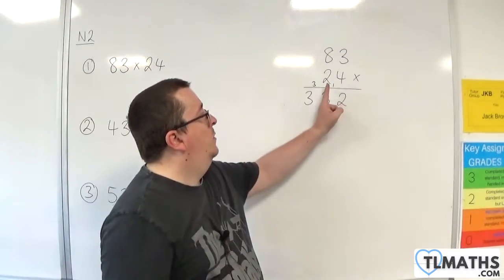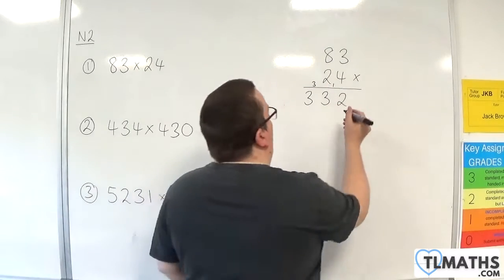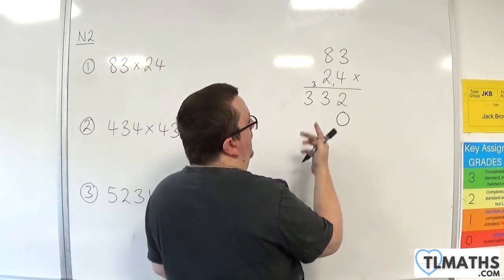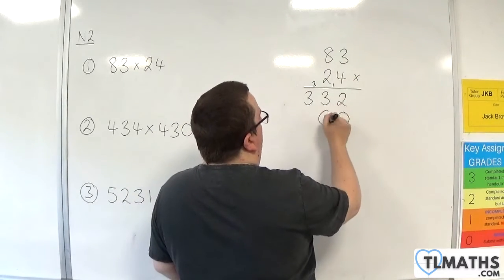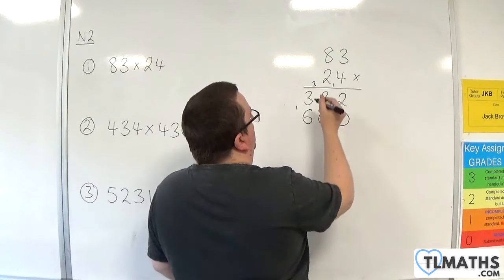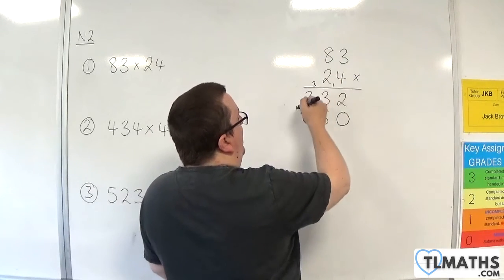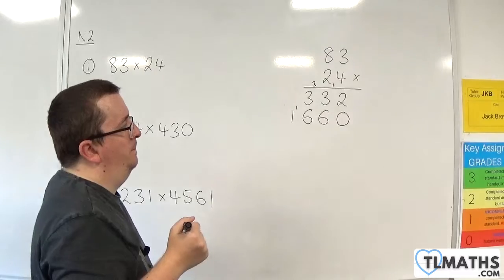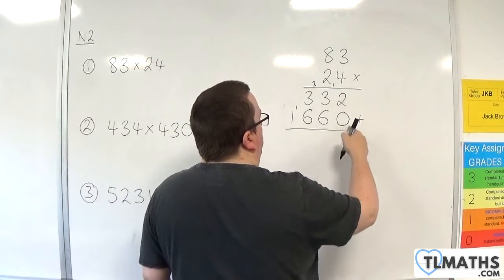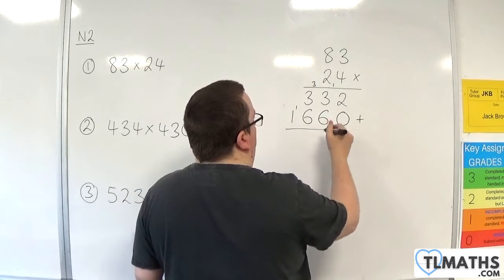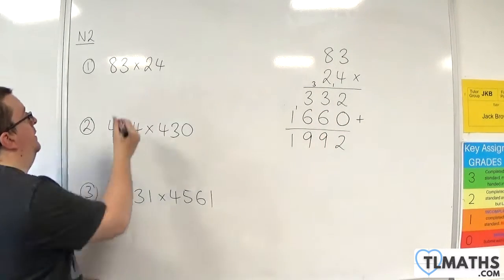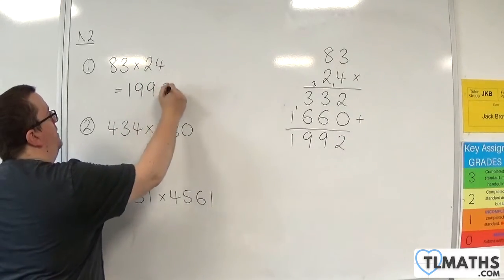Then we are multiplying by 20, so we add a 0 and then we can just multiply by 2 as normal. 2 times 3 is 6, 2 times 8 is 16. So put the 6, carry the 1, and 2 times 0 is 0, add the 1, so the 1 just drops down. We then add together our two results: 2 plus 0 is 2, 3 plus 6 is 9, 3 plus 6 is 9, and we've just got the 1. So our first answer is 1,992.